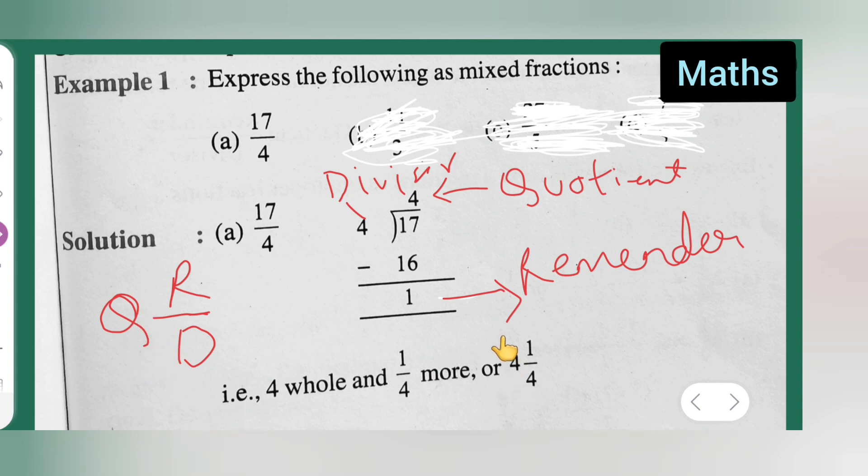Q is what? Quotient over here, 4 and then 1 remainder. Remainder upon divisor, 1 upon 4. So I hope you all have understood and thanks for watching.